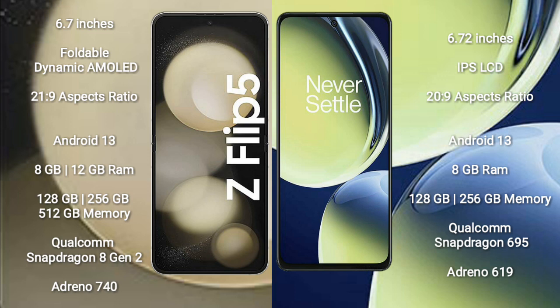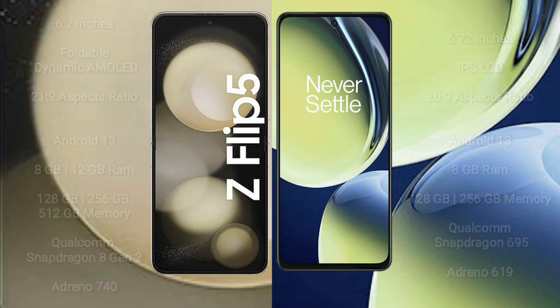Samsung Galaxy Z Flip 5 comes with 8GB or 12GB RAM and 128GB to 256GB internal storage, powered by the Qualcomm Snapdragon 8 Gen 2 processor and Adreno 740 GPU. OnePlus Nord CE 3 Lite comes with 8GB RAM and 128GB to 256GB internal storage, with a Qualcomm Snapdragon 695 processor and Adreno 619 GPU.